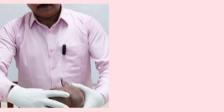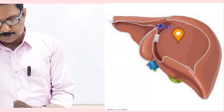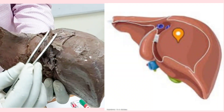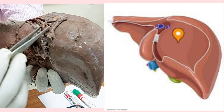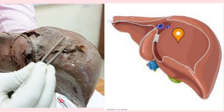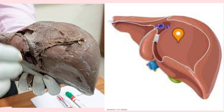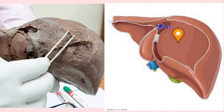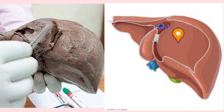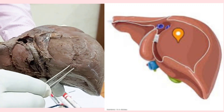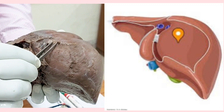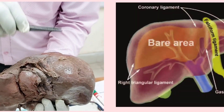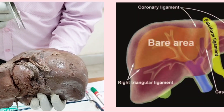The important one is the bare area which is present on the posterior surface. On the right lobe of the liver posteriorly, there is an area which is non-peritoneum. This is called the bare area, and this area should have a boundary.